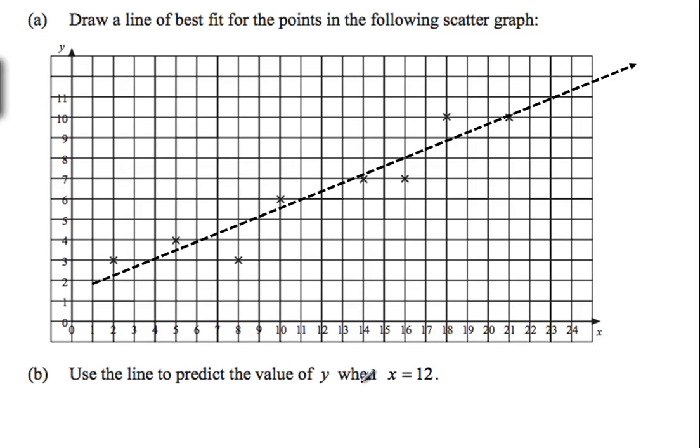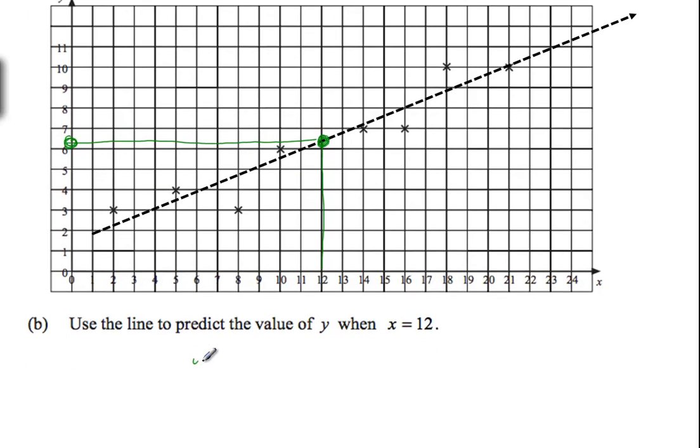Predict the value of Y when X equals 12. Okay, so when X equals 12, we can just follow 12 up here until it hits the line. It hits our prediction right there. And then we can sort of follow across until it hits here. And that number looks to be about 6.3. I mean, we're predicting here, so it doesn't have to be perfect. So we can say that Y is approximately 6.3.